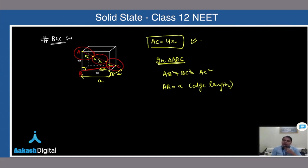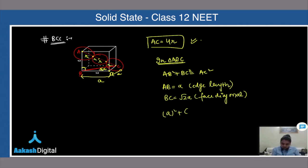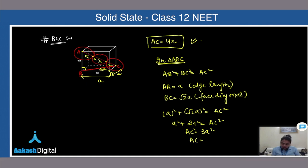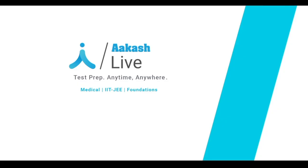Now substituting into the Pythagoras equation: a² + (√2·a)² = AC², which gives a² + 2a² = AC², so AC² = 3a², and therefore AC = √3·a.